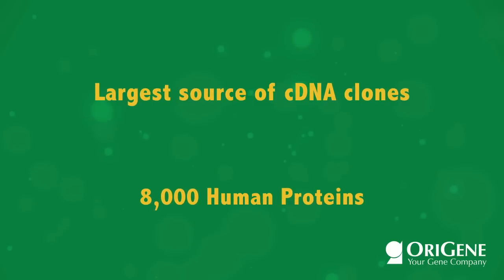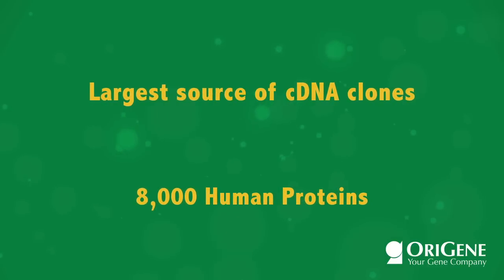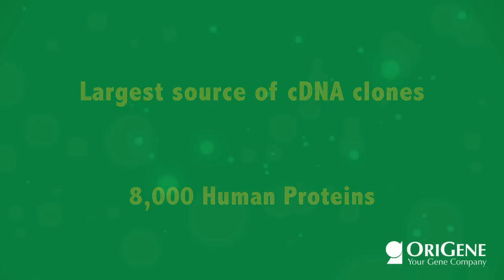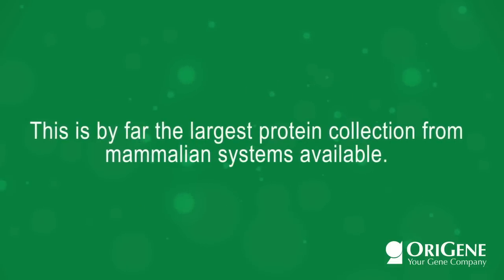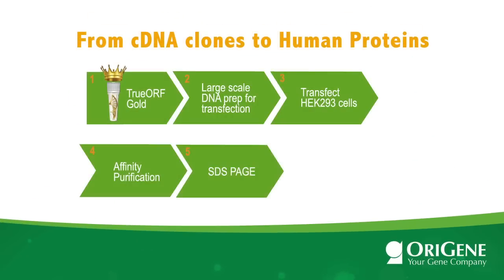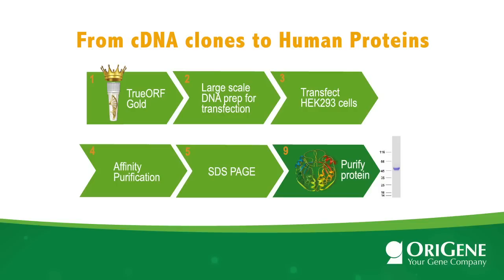produced thousands of human proteins from HEK-293 cells, reaching 8,000 at the end of 2012 and continuing to grow. This is by far the largest protein collection from mammalian systems available. Our multi-step process starts with a TrueORF Gold clone, a ready-to-use expression vector verified for mammalian protein expression. Ion exchange columns are used to produce milligrams of purified plasmids, which are then used to transfect large-scale HEK-293 cell cultures.